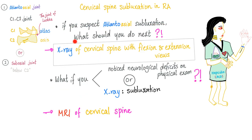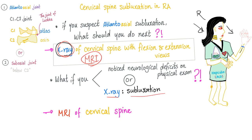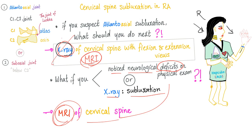If you suspect atlantoaxial subluxation, you should order an X-ray of the cervical spine with flexion and extension views. Why not use MRI first? Always think cheap — start with the X-ray first. If the X-ray shows subluxation, then order an MRI of the cervical spine. Or, if on physical exam you've noticed neurological deficits, skip the X-ray and go straight to MRI.